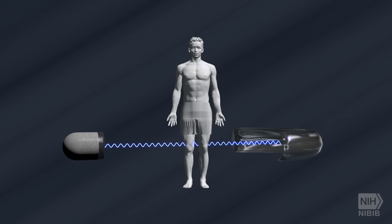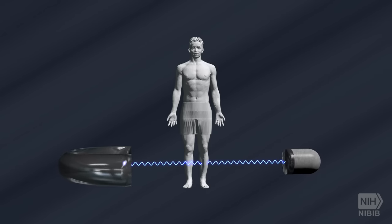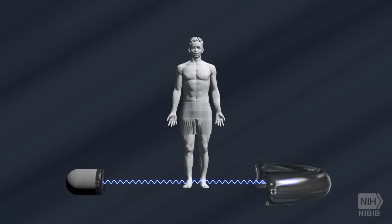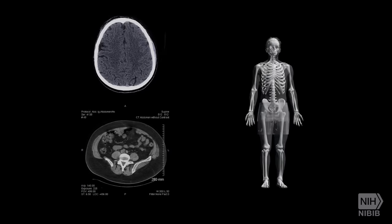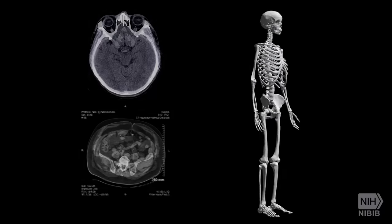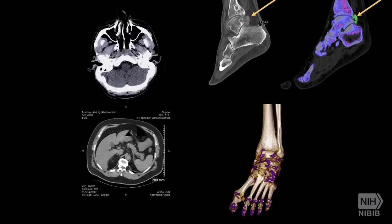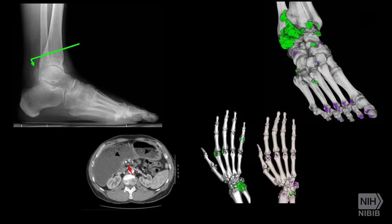As the x-ray passes through the patient, they are picked up by the detectors and transmitted to a computer. Image slices can either be displayed individually in two-dimensional form or stacked together to generate a three-dimensional image that can reveal abnormal structures or help the physician plan and monitor treatments.